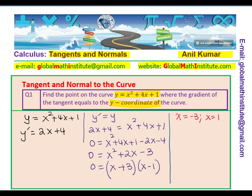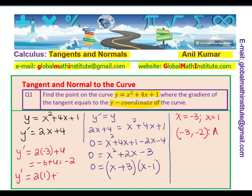We get two points. Let's find the y values. Since the y value equals the derivative, we plug in x equals minus 3: 2 times minus 3 plus 4 gives minus 6 plus 4, which is minus 2. So one point is (minus 3, minus 2) — call this point A. For x equals 1: 2 times 1 plus 4 equals 6. So the other point is (1, 6). You should substitute back into y equals x squared plus 4x plus 1 to verify both solutions.